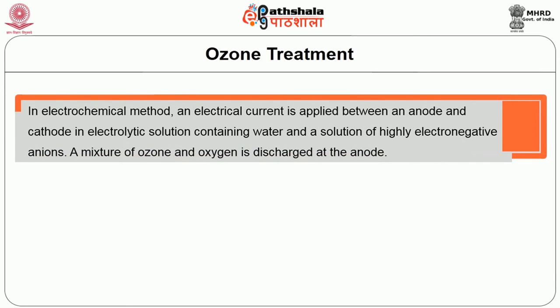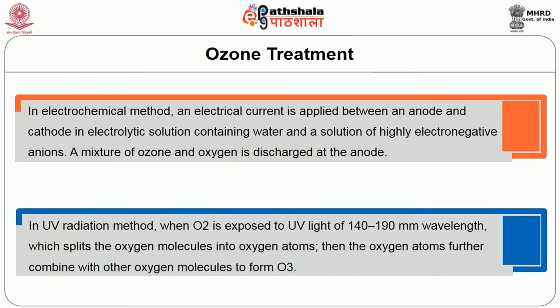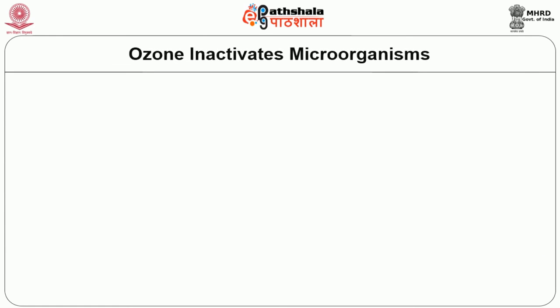In the electrochemical method, an electric current is applied between an anode and cathode in an electrolytic solution containing water and highly electronegative anions; a mixture of ozone and oxygen is discharged at the anode. In the UV radiation method, oxygen is exposed to UV light of 140 to 190 nanometer wavelength, which splits oxygen molecules into oxygen atoms that then combine with other oxygen molecules to form ozone.